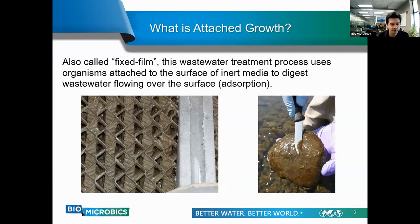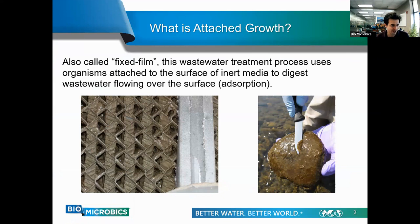Attached growth in wastewater treatment means growing organisms that are stuck to the surface of some inert material — called a media — to digest wastewater as it moves around and over that surface. This is an absorptive process where pollutants interact with the surface of the media and the microorganisms living on it, and that's how pollutants get removed and transformed.